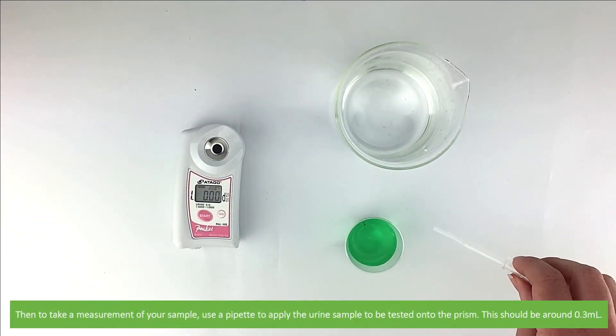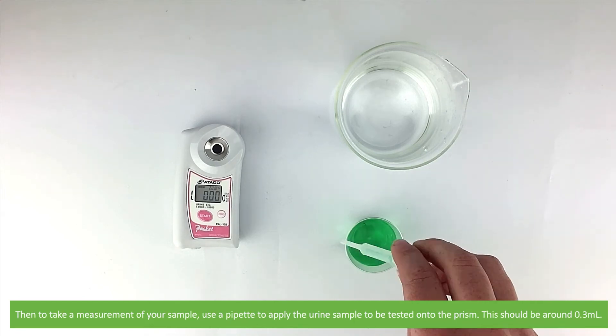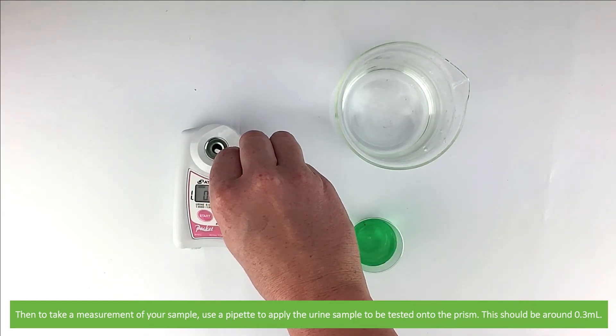Then, to take a measurement of your sample, use a pipette to apply the urine sample to be tested onto the prism. This should be somewhere around 0.3 mils.